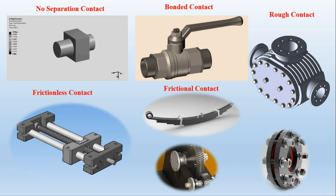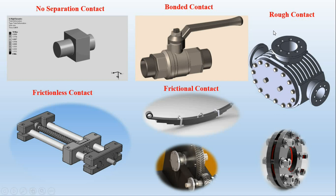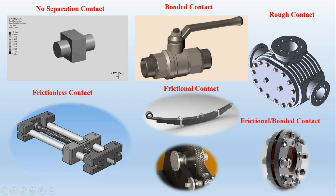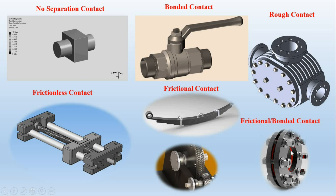Rough contact is also a non-linear contact where the coefficient of friction is infinite. An example is between a cover and its casing, where rough contact can be defined. Another example is a flange and gasket connection — the red element represents the gasket and there is also a bolt connection. Between the gasket you can define a frictional connection, and between the nut and washer or between the washer and flange you can define bonded contact.